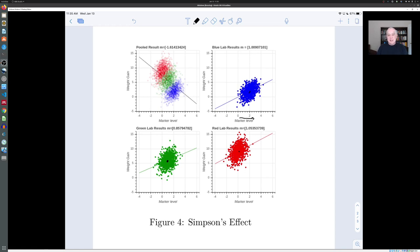What happens if you take the results of the three labs and you combine them into a single experiment without accounting for the fact that they were done under different circumstances and in different places? That's what's shown here in the upper left: we take all the points—the blue points, the green points, and the red points—and put them on a single plot.